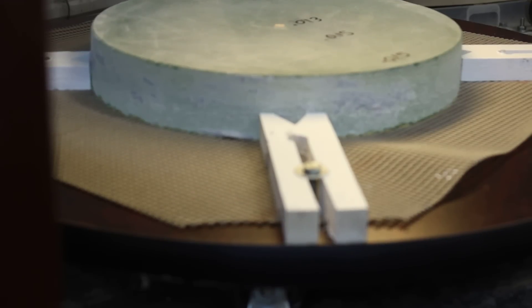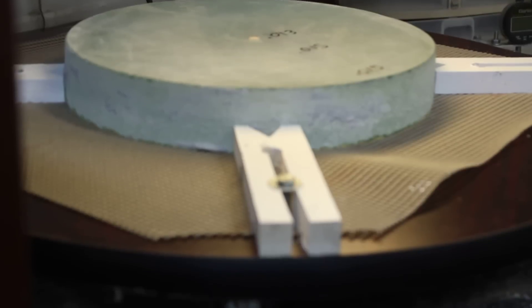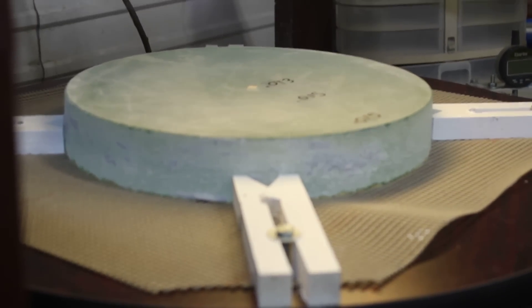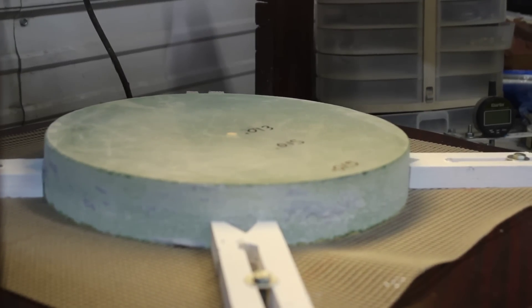You can see the turntable there. It's got some white looking hold-downs to hold the mirror in place after I get it centered. This is the 12-inch mirror that I've been working on.